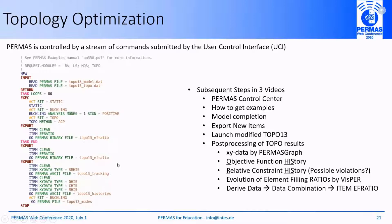In the subsequent videos I will show the following points: starting with the PERMAS Control Center, how to get examples, introducing the model completion process for optimization, how to export new items, launching the example, and post-processing topology optimization results. XY data are visualized using PERMAS graph. I will show the evolution of the objective function, the relative constraint history to check for constraint violations, and the evolution of the element filling ratio — conducted directly in PERMAS graph by data combination.